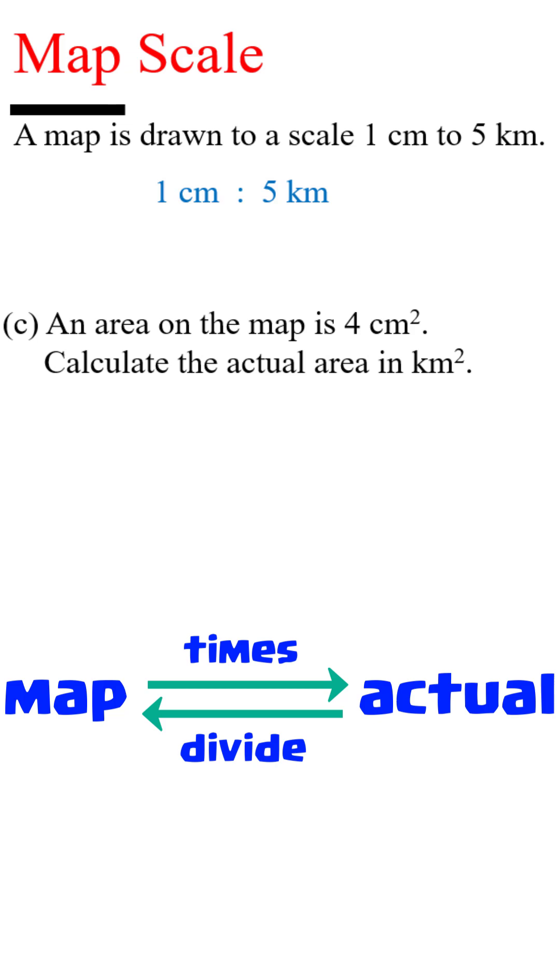When the question is asking us about area, we must change the map scale to area scale. How do we do it? Squaring it. When we square 1cm, it will be 1cm². 5km will become 25km².